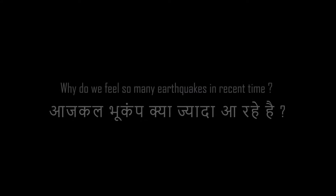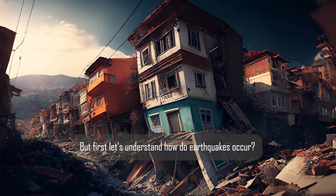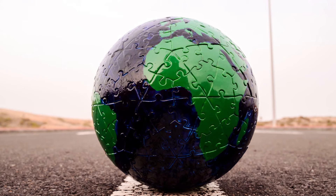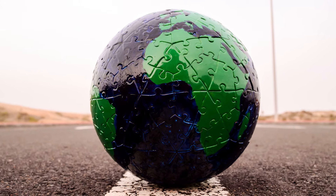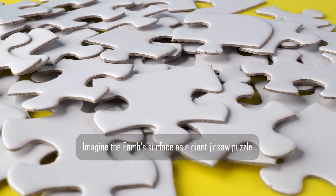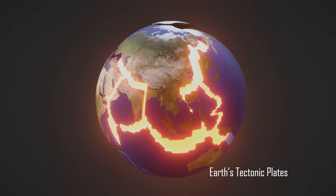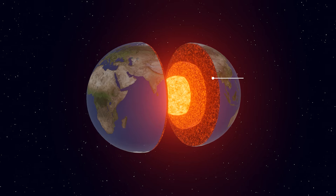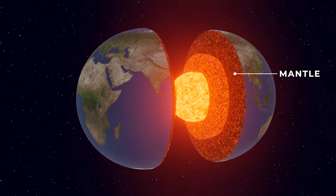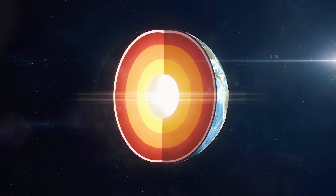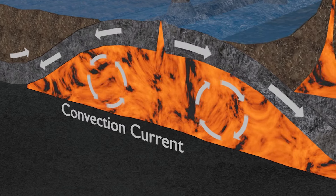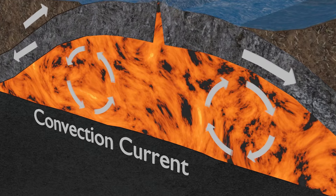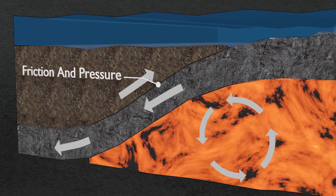Why are there so many Bhukamps? We understand how earthquakes come. Imagine that the Earth's surface is a big jigsaw puzzle. Every piece is called a Tectonic Plate, floating on a layer called the mantle. These plates are driven by convection currents and are in constant motion, creating friction and pressure against each other.